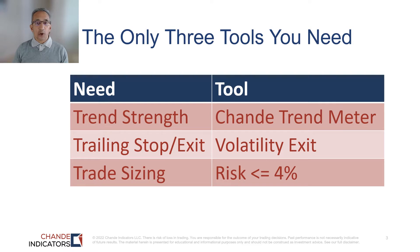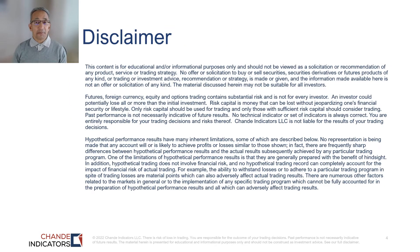Here are the specific ways we are going to answer those three questions. For trend strength, we'll measure it with the Chandé Trend Meter. For the exit, we'll use a volatility exit. For trade sizing, we'll risk between one and four percent of available equity, so that even if we have a losing trade, our approximate loss will equal the amount we risked.